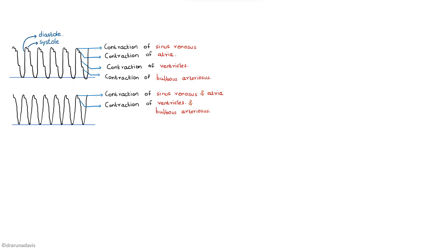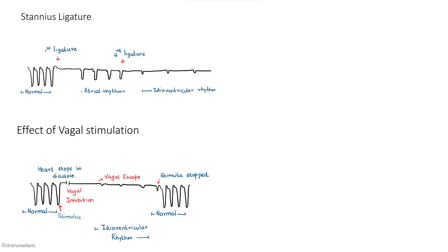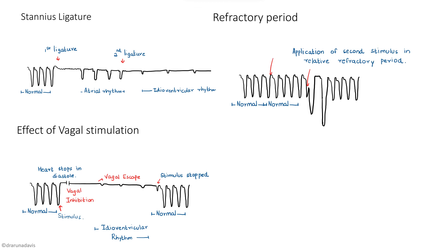In this video, we have discussed the normal cardiogram, the effect of warmth and cold on the sinus venosus and ventricles, the Stannius ligature, the effect of vagal stimulation, and the demonstration of the refractory period. I hope these graphs are clear.